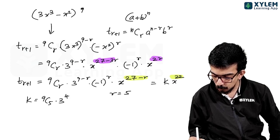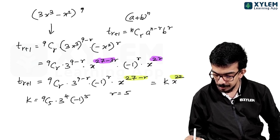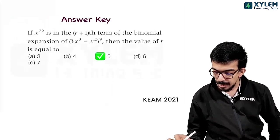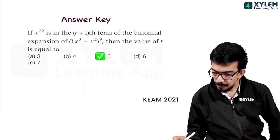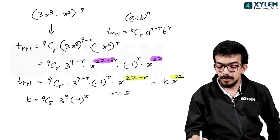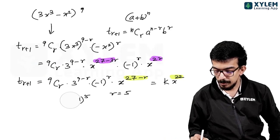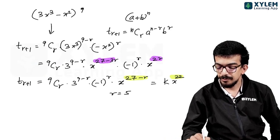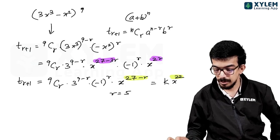R is equal to 5. The k value is 9C5 into 3 raised to 4 into (-1)^5. R is equal to 5. Simple question.